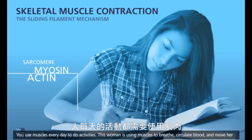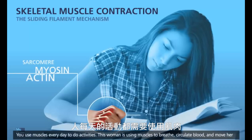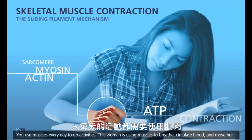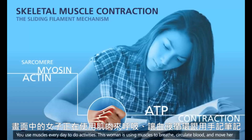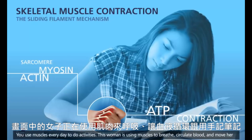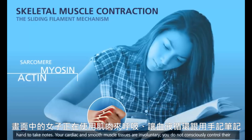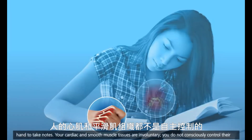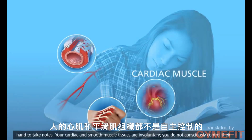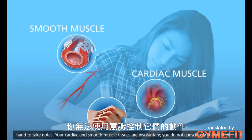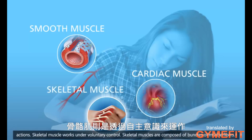You use muscles every day to do activities. This woman is using muscles to breathe, circulate blood, and move her hand to take notes. Your cardiac and smooth muscle tissues are involuntary — you do not consciously control their actions. Skeletal muscle works under voluntary control.